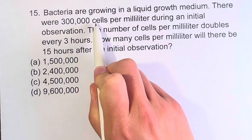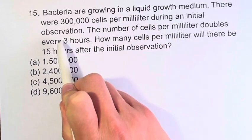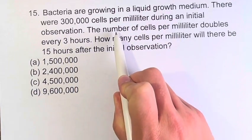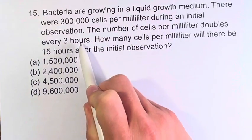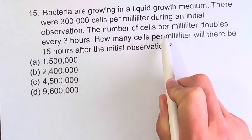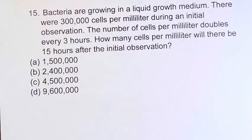There were 300,000 cells per milliliter during an initial observation. The number of cells per milliliter doubles every three hours. And we're asked how many cells per milliliter will there be 15 hours after the initial observation.